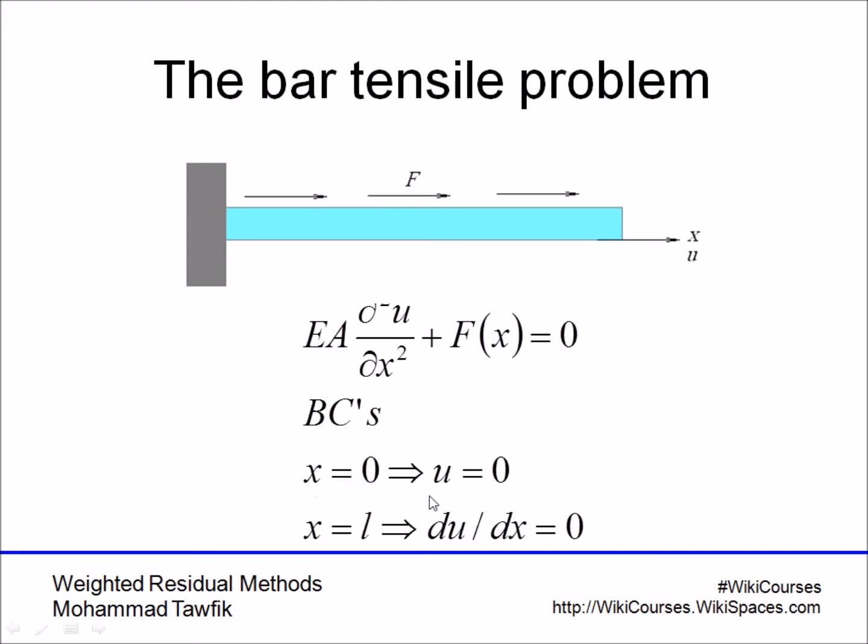and this bar is fixed from the left and free from the right. The boundary conditions would be: at X equals zero, the displacement of the bar will be equal to zero because it can't move. And at X equals L, the slope du/dx will be equal to zero, which equals the strain.